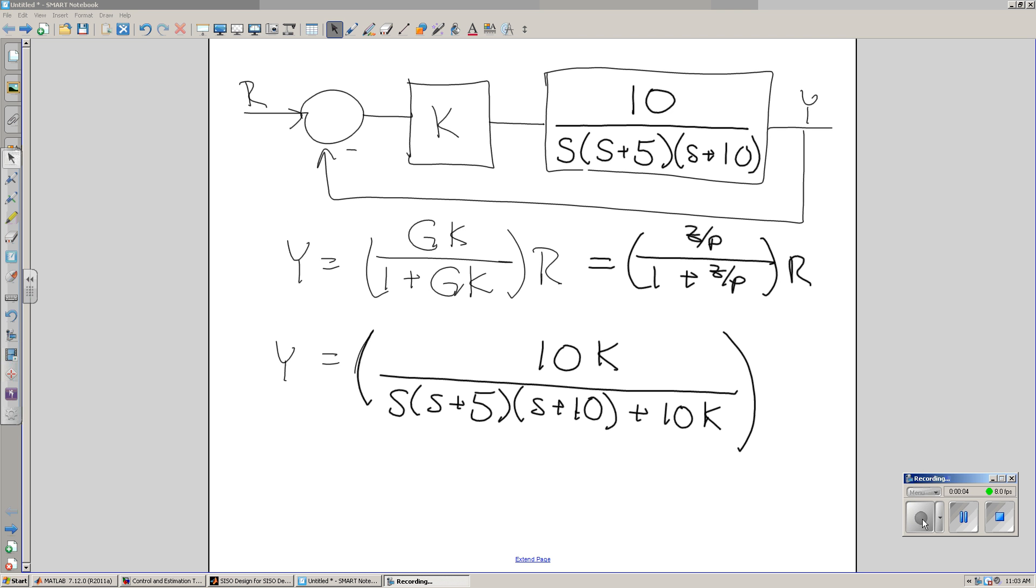Let's look at root-locus plots. A root-locus plot is a plot of the roots of a closed-loop system as the gain k varies between 0 and infinity.